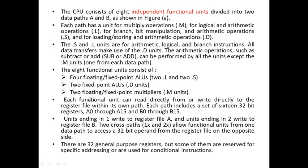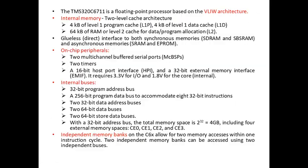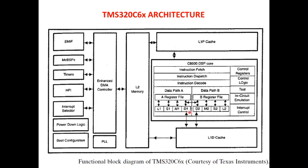The eight functional units consist of four floating point/fixed point units — two L and two S — two fixed point dot D units, and two floating point or fixed point multipliers (dot M units). Each functional unit can read or write directly to the register file within its own data path, and there can be communication between the levels of cache, the L2 memory, and the L1P cache.